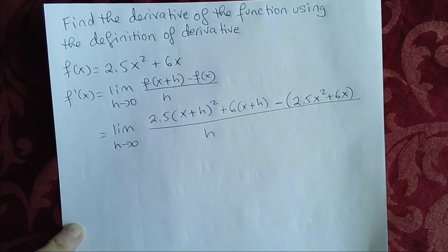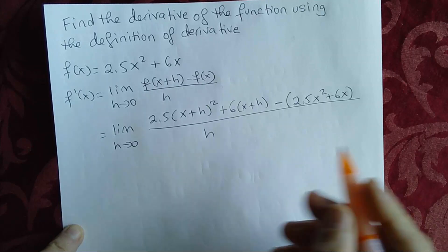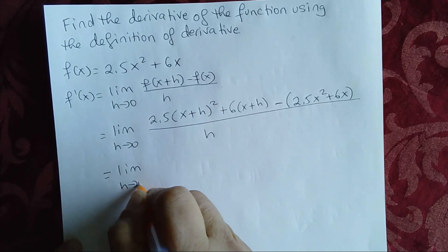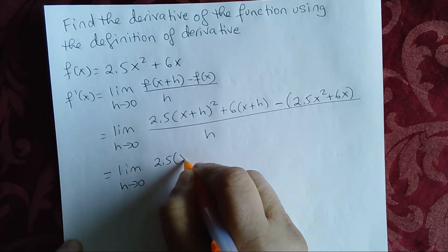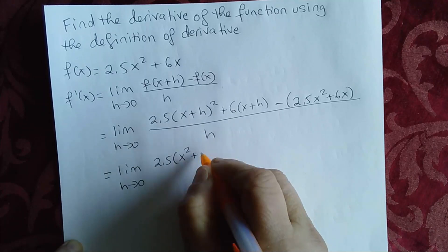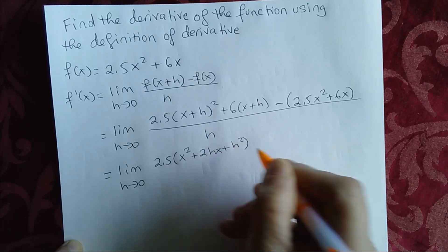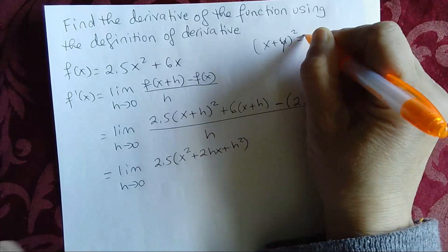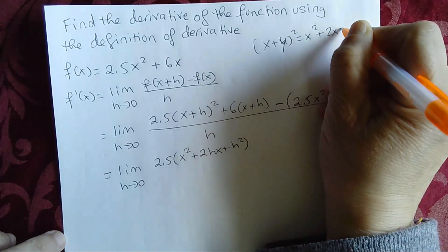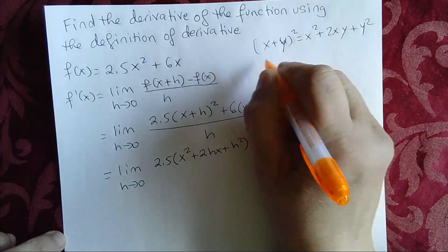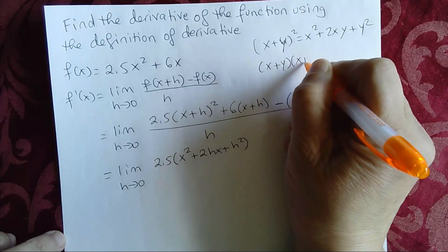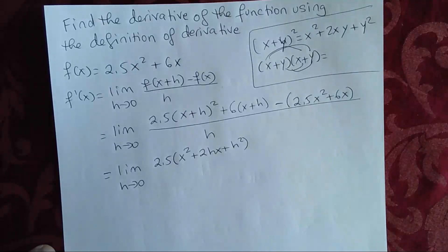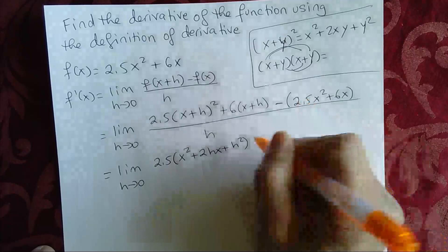Now we need to simplify this. We need to expand this first. The limit as h approaches 0: 2.5 times — that becomes x squared plus 2hx plus h squared. If you recall, (x plus h) squared, or (x plus y) squared, is the same as x squared plus 2xy plus y squared. You could also do the FOIL method. This is a little algebra review.